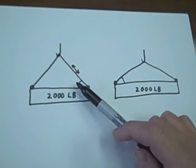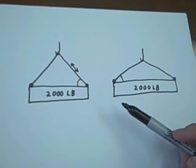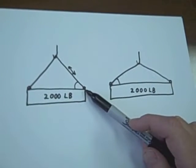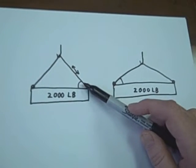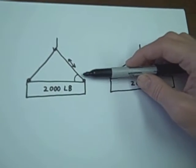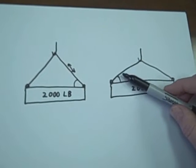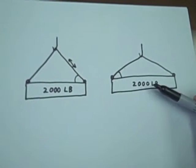We can see we've used this and this sling and connected them closer in this example. The angle is nearer to 90 degrees and there are less forces exerted in this strap than there are in the one that is connected further apart.